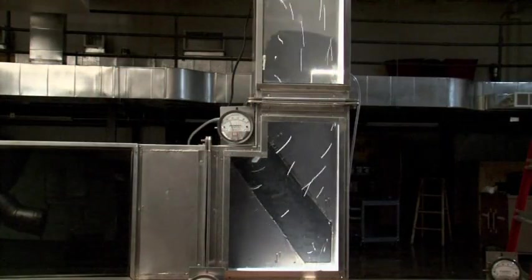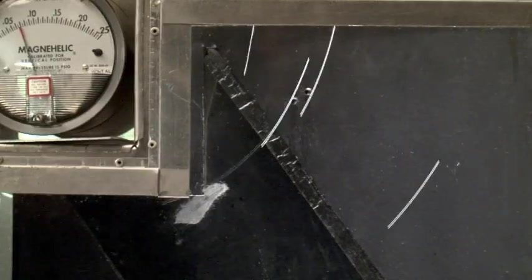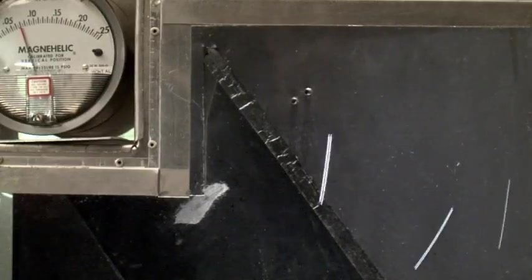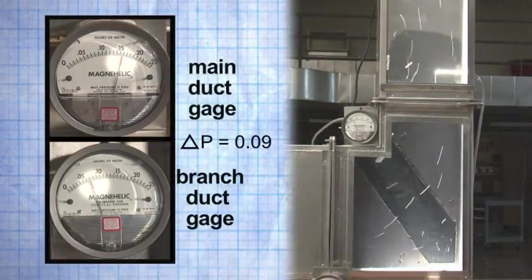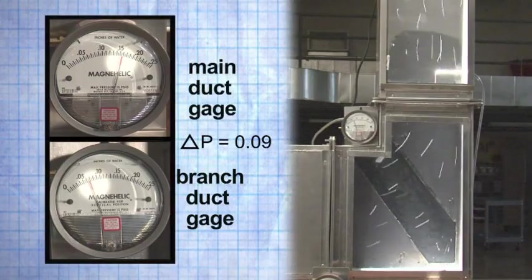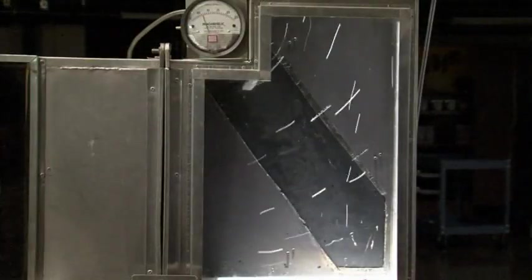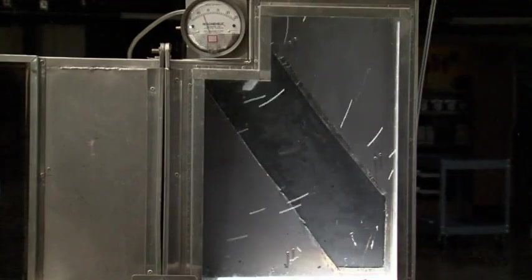When the turning vanes are removed from the square throat elbow, turbulence can be clearly seen in both corners of the fitting, because the fixture that so carefully guided the path of the airflow has been removed. Again, turbulence and stagnant air movement is a visual proxy for pressure loss.